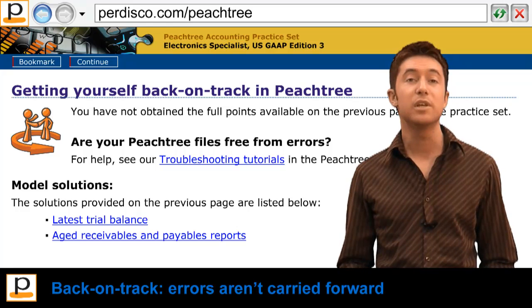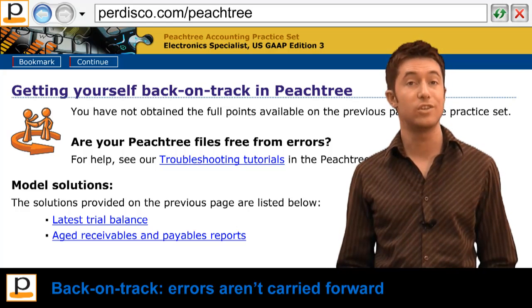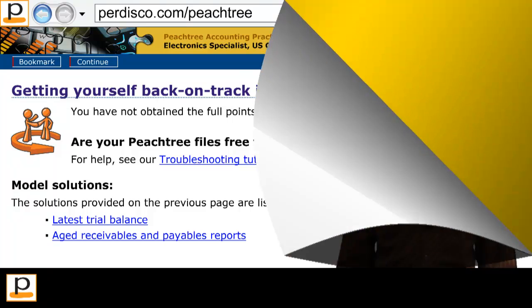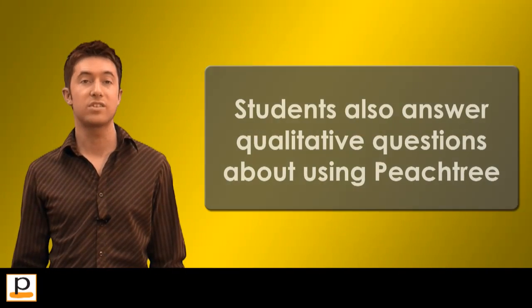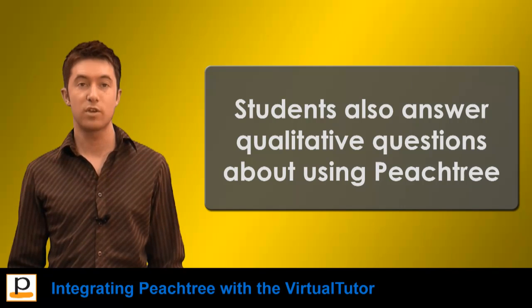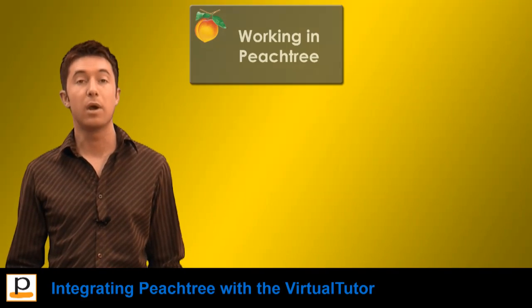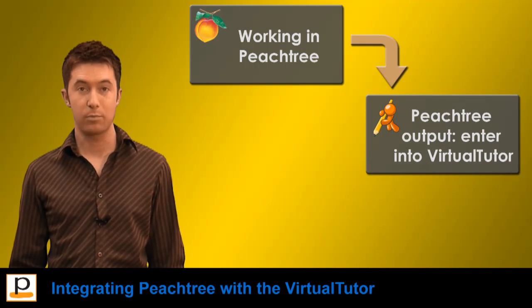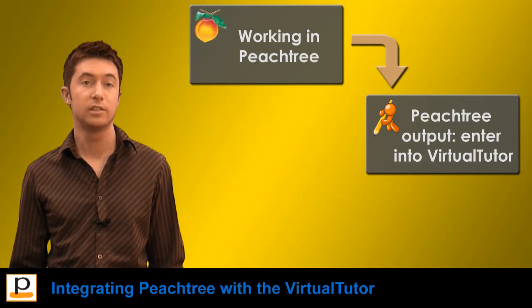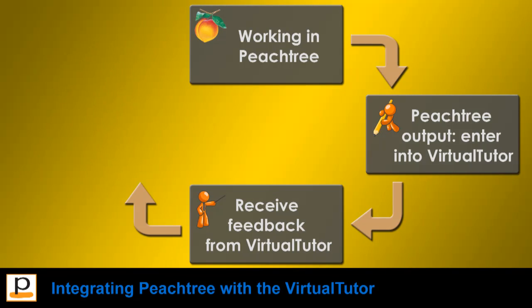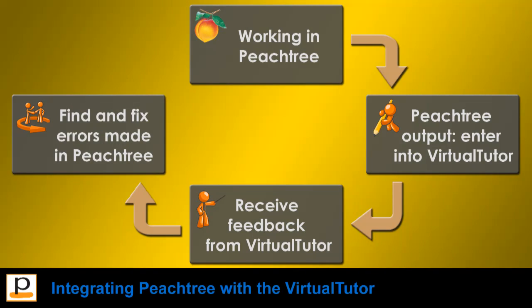An early mistake is simply a learning experience that does not continue to unduly lower their overall score. To summarize: students complete each part of their practice set in a process that integrates their use of Peachtree with Pedisco's virtual tutor technology — by working in Peachtree, generating Peachtree output and entering it into the virtual tutor, receiving performance feedback from the virtual tutor, and finding and fixing errors made within Peachtree.